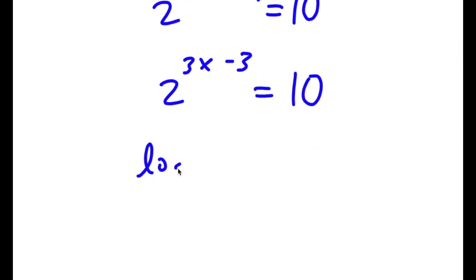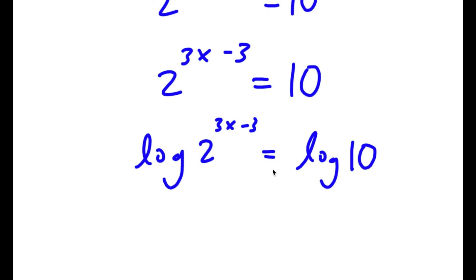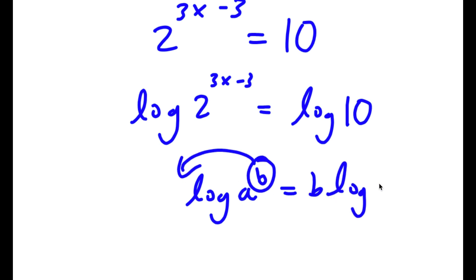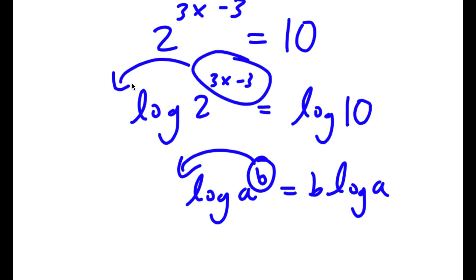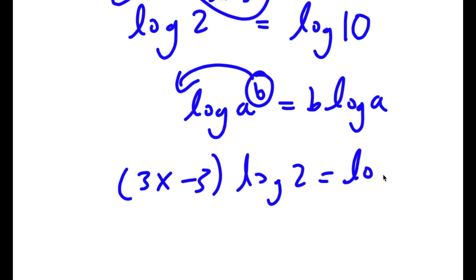Now I'm going to take the log on both sides, so I get log of 2 to the power of 3x minus 3 is equal to log of 10. And if I have something in the form log of a to the power of b, I can move this exponent b to the front so this equals b times log a. So in this case b is 3x minus 3, so moving it to the front I get (3x minus 3) times log 2 is equal to log 10.